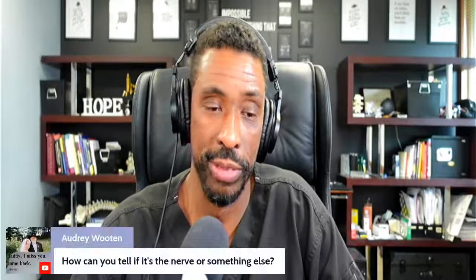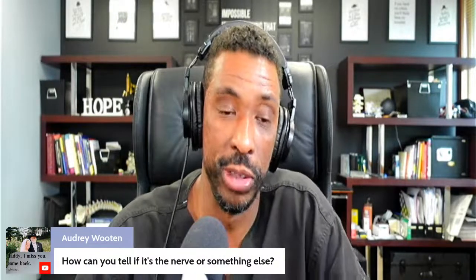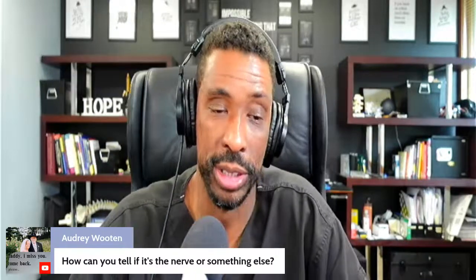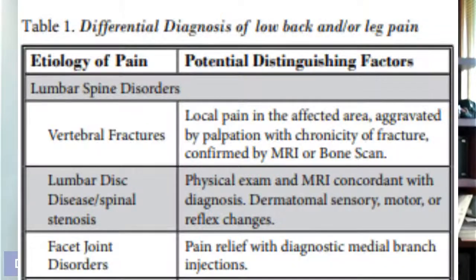One of the questions that pops up is: how can you tell if it's a nerve or something else? So let's talk about the common causes of back pain and what you can potentially experience. One is a vertebral fracture — normally the pain is in the area and is aggravated with palpation, meaning pressing on the area, such as pressing on the spinous processes. Another is lumbar disc disease or spinal stenosis, which may show dermatomal distribution.